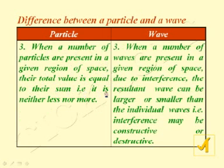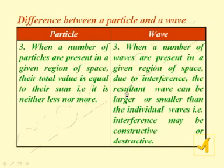That total value is neither less nor more. But when a number of waves are present in a given region of space, due to interference the resultant wave can be larger or smaller than the individual waves. The interference may be constructive or destructive. These are the differences between particle and wave character.